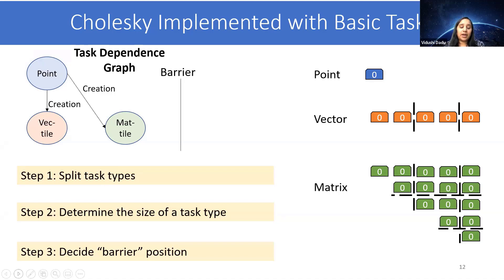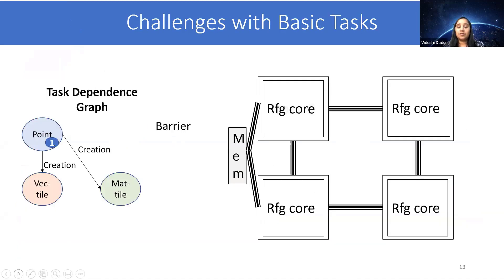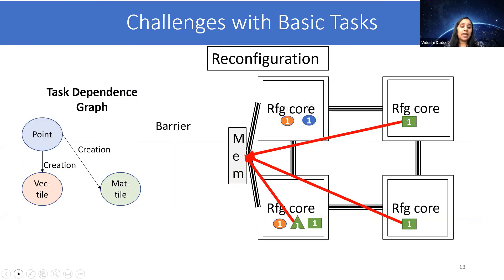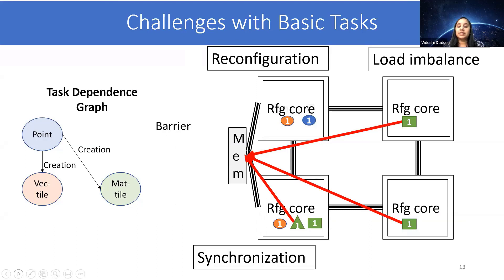To understand its impact, let's see how this task dependence graph would be implemented on traditional hardware. The task instance for one would be created at the reconfigurable core, and then its vector and matrix tasks would be created. And these would then write data to memory at a barrier. So as these tasks are scheduled, being unaware of the configuration information, it can incur a significant reconfiguration overhead. As the tasks are of variable size, it will cause load imbalance. And then finally, because of waiting on a barrier, there will be synchronization overhead.